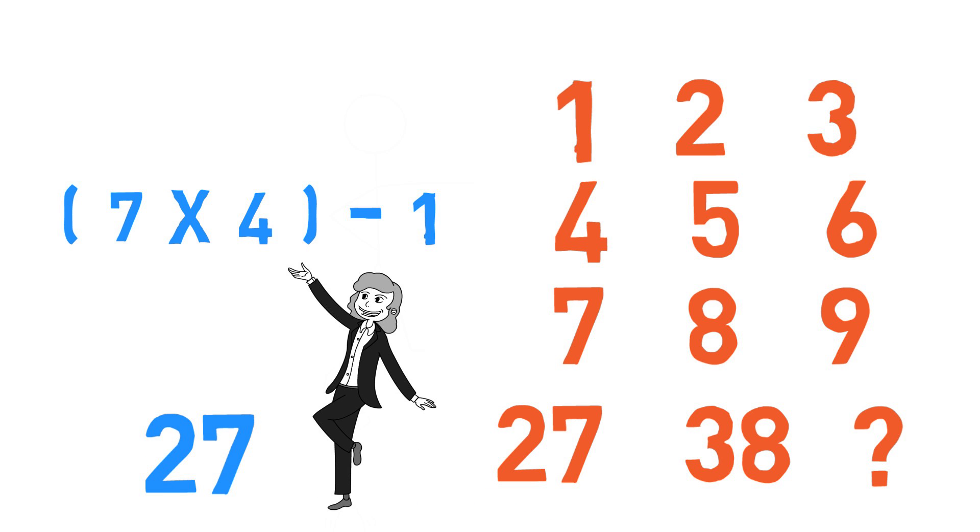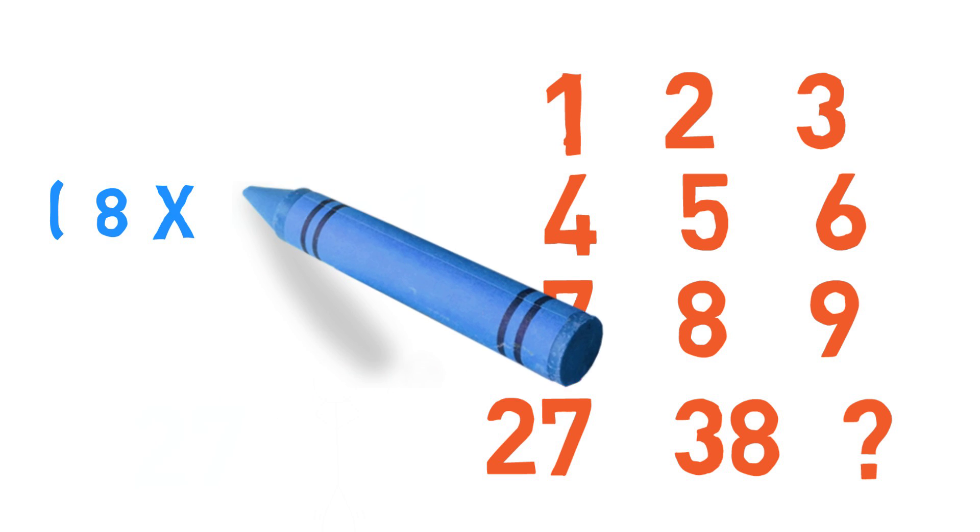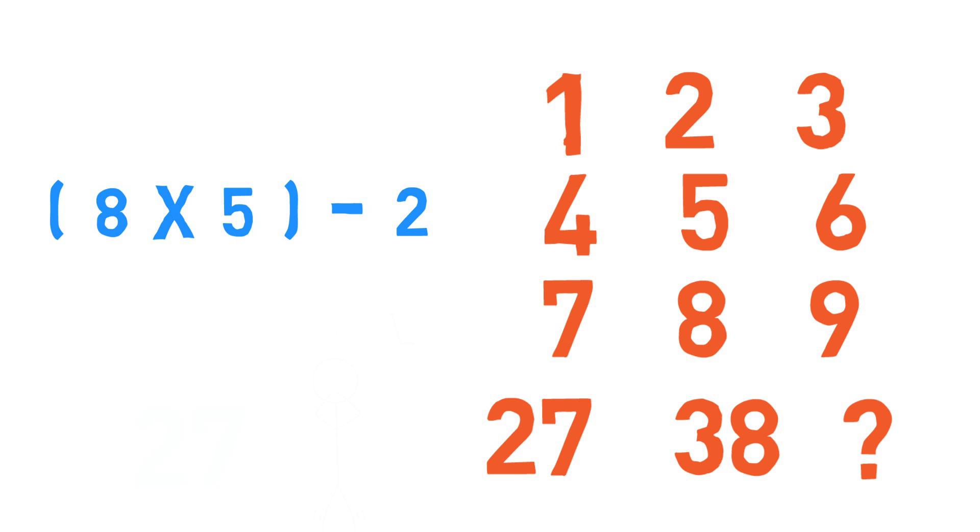Now that's pretty good but will this logic hold for the second column? So we have 8 times 5 minus 2 which is 38. Cool.